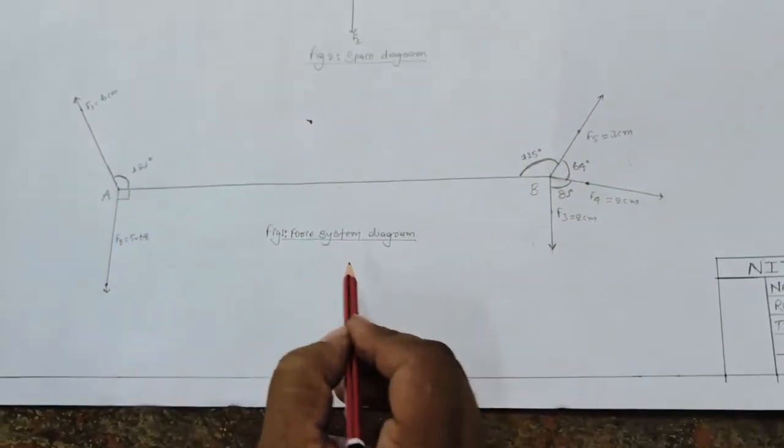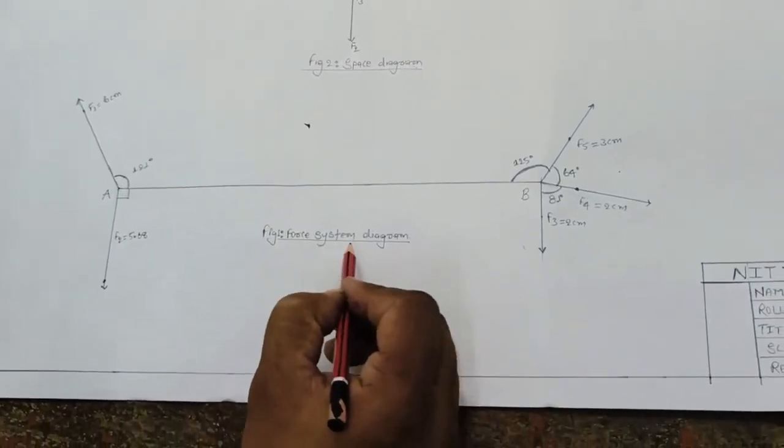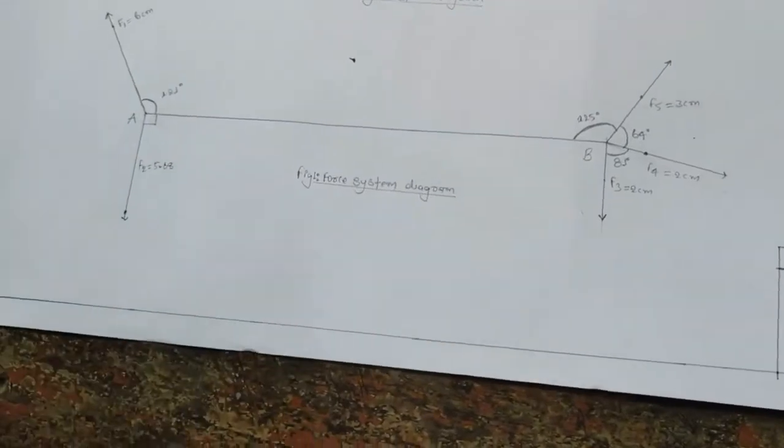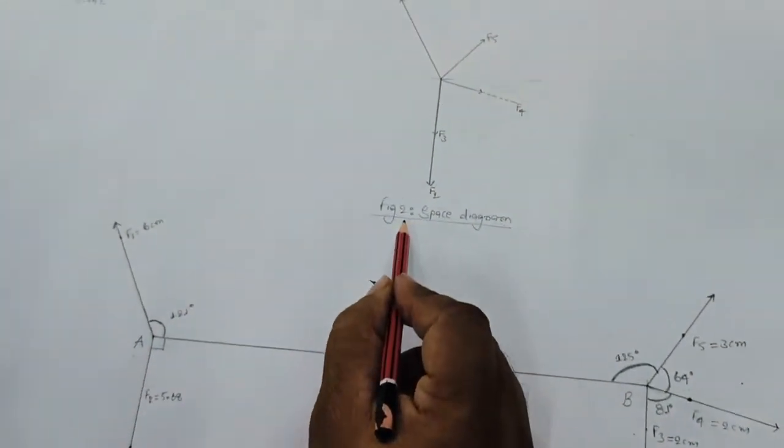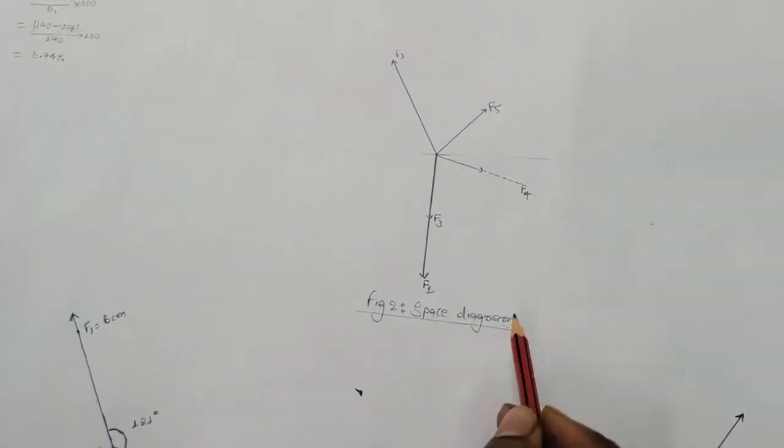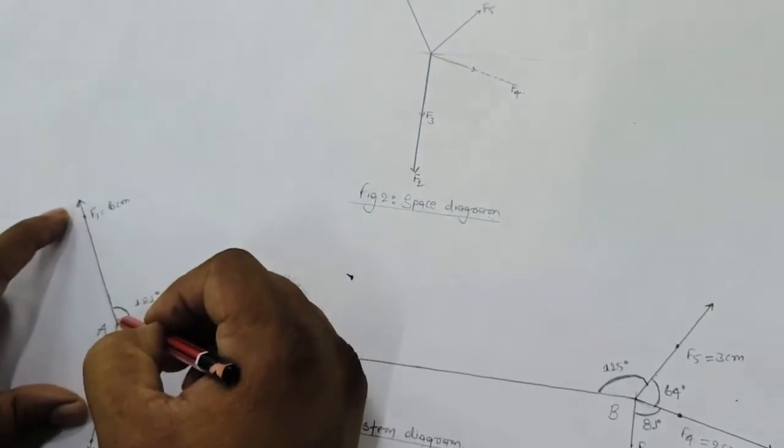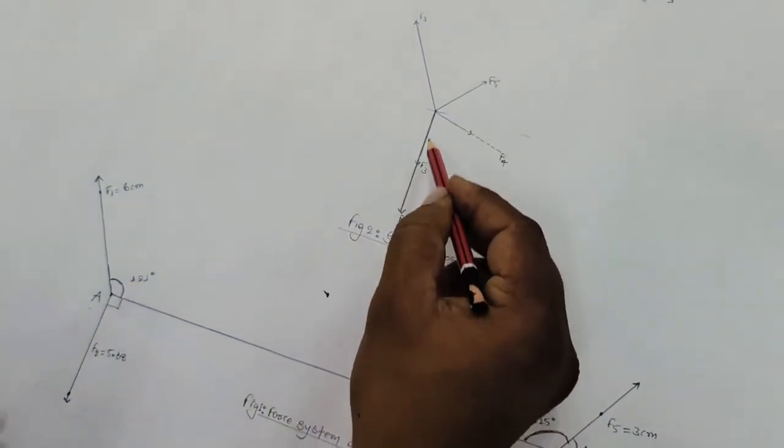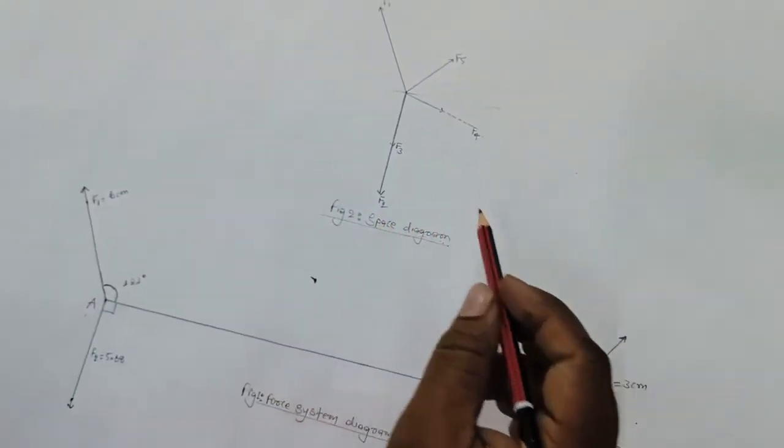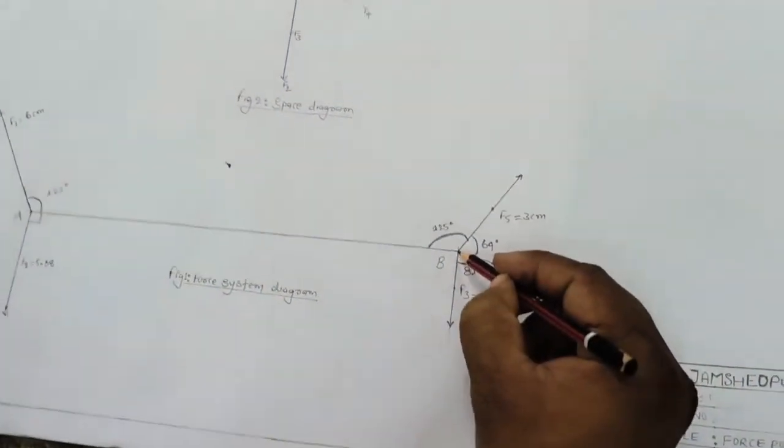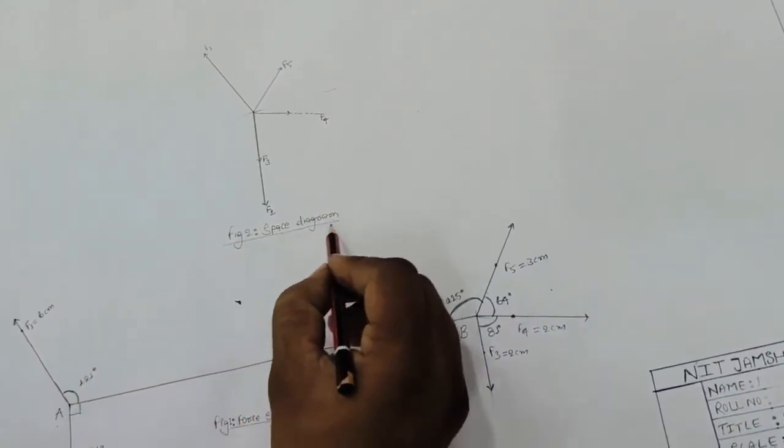We can label this force system diagram. With the help of these two points A and B, we can create the space diagram parallel to F1, F2, F3, F5. So in this way we get a space diagram.